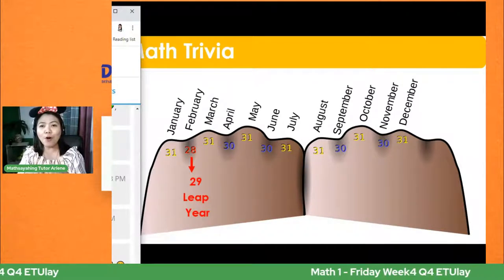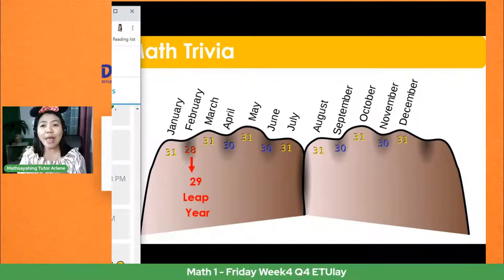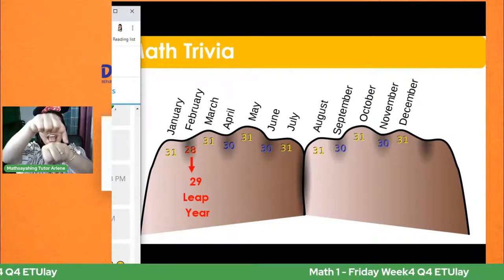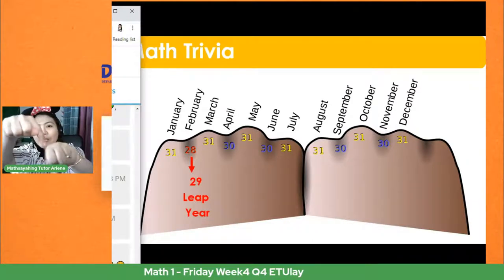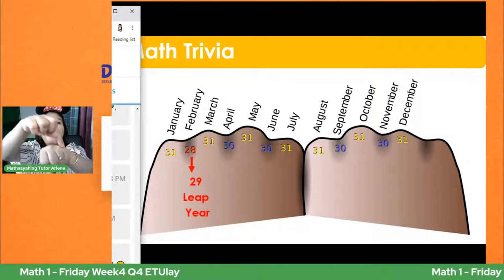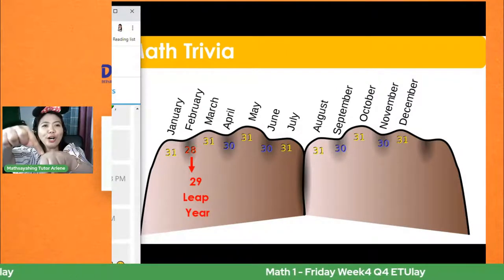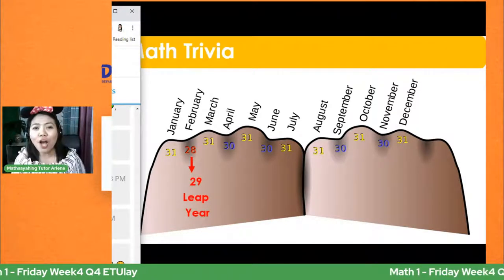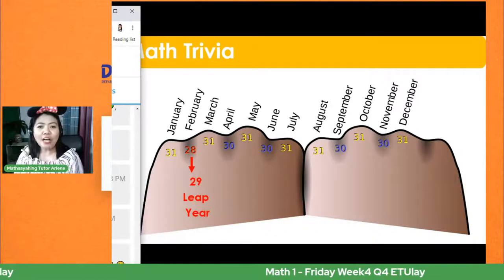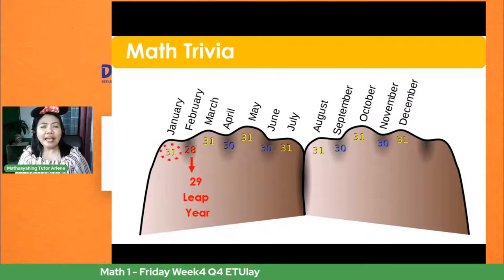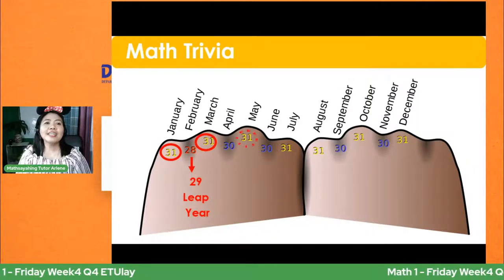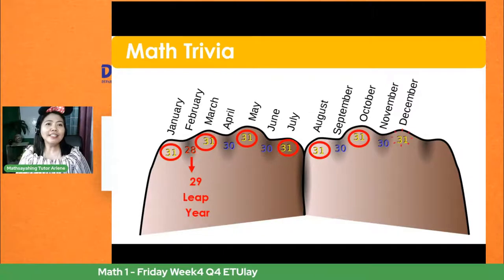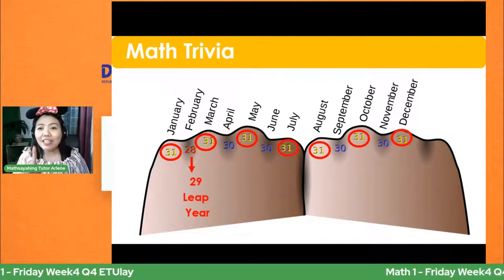Yun tinatandaan ko para alam ko kung ilang araw sa loob ng isang buwan. Yung bawat joint — Enero, Marso, Mayo, Hulyo, Agosto, Oktubre, at Disyembre — lahat yun ay mayroong 31 days. Tingnan sa picture: ang January, March, May, July, August, October, December lahat sila ay may 31 days.